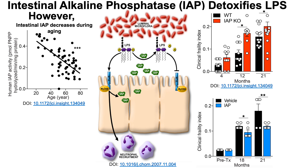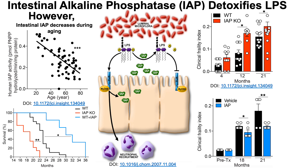IAP is functionally important. Equally important is lifespan. Looking at survival plotted against age in mice, IAP knockout mice lived significantly shorter lives compared to wild-type controls. In contrast, animals supplemented with IAP had both an increased average and maximum lifespan. Based on this data, we can argue that IAP is important for both health and longevity.